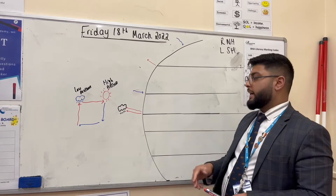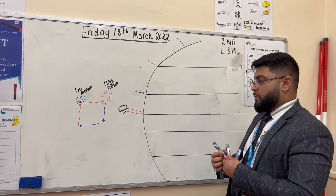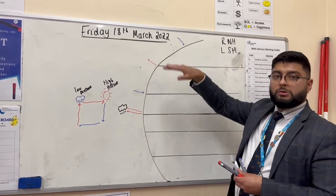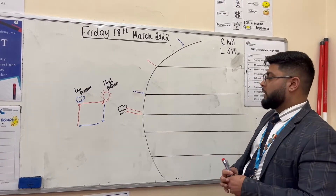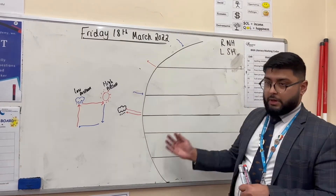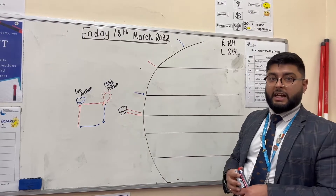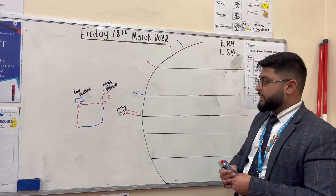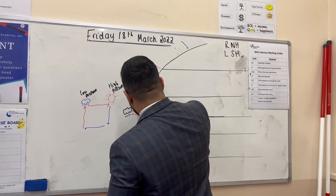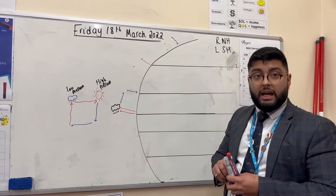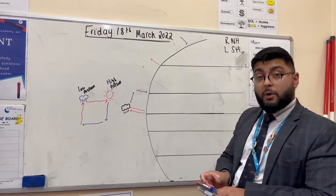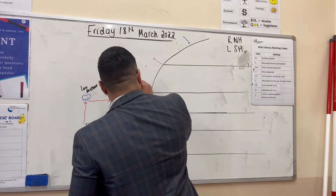If low pressure stayed at the equator and high pressure stayed at the poles all the time, the equator would always be hot and the poles, which receive more spread-out and less concentrated sunlight, would always be cold. So the globe circulates — the atmosphere circulates that air — and that's where we get the name global atmospheric circulation. This air cools down, condenses, stops forming clouds, and begins to sink, which we call high pressure, leading to sunny conditions.